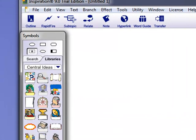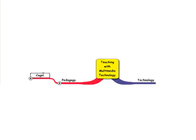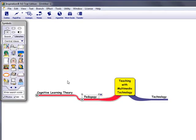So here I can write cognitive learning theory. And then I click the pedagogy again and then click subtopic. Now I add cooperative learning.